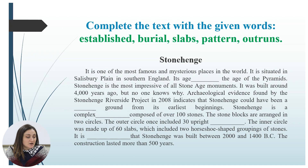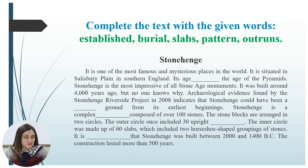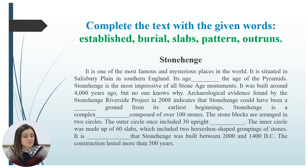Stonehenge. It is one of the most famous and mysterious places in the world. It is situated in Salisbury Plain in southern England. Its age outruns the age of the pyramids. Stonehenge is the most impressive of all Stone Age monuments. It was built around 4,000 years ago, but no one knows why. Archaeological evidence found by the Stonehenge Riverside Project in 2008 indicates that Stonehenge could have been a burial ground from its earliest beginning. Stonehenge is a complex pattern composed of over 100 stones.